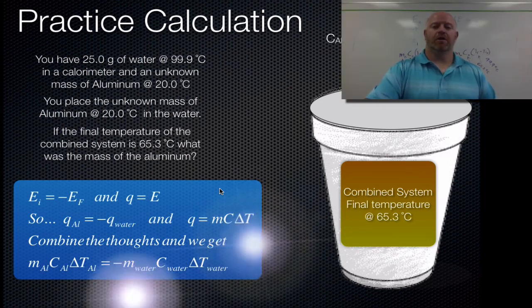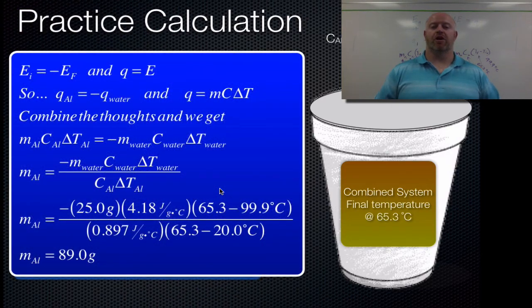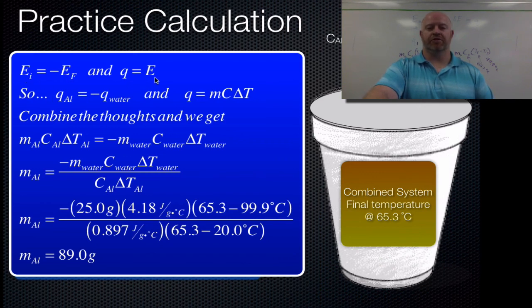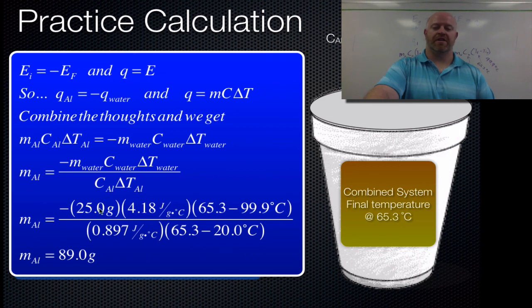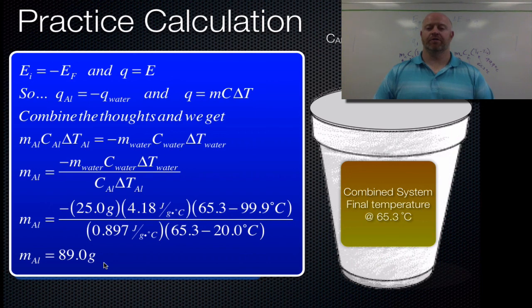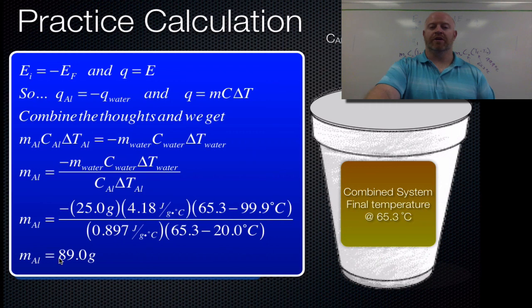Here's all the work together. Starting from the first law — energy gained equals energy lost — we write q = m·c·ΔT, combine the equations, rearrange, plug in all numbers, and solve. The mass of the aluminum comes out to 89 grams. If you ever get a negative mass or negative specific heat capacity, it's probably because you forgot to carry the negative sign through your calculation — that's the first thing to check.